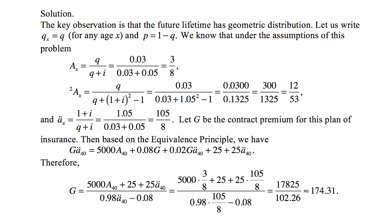Let G be the contract premium for this plan of insurance. Then, based on the equivalence principle, we have G·Ä₄₀ = 5000·A₄₀ + 0.08G + 0.02G·Ä₄₀ + 25 + 25·Ä₄₀. This is based on what we were told about the expenses. The right-hand side is the actuarial present value of the death benefit plus the actuarial present value of expenses.